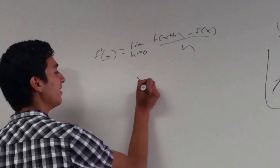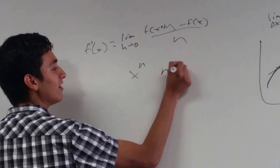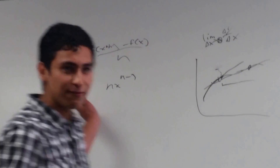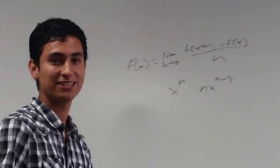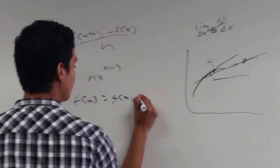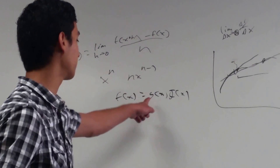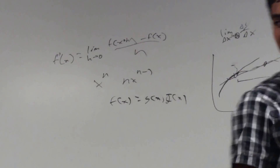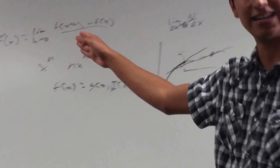There are shortcuts to finding derivatives. We can actually use what is known as the power rule, which states that the derivative of x to the power of n is simply n times x to the power of n minus 1. That's only used when we're dealing with variables to a power. Now, if we're dealing with a function that is defined as a product between two other functions, we actually do what is known as the product rule. Suppose f(x) is defined as a product of g(x) and j(x). The derivative is the derivative of the first times the second, plus the derivative of the second times the first.